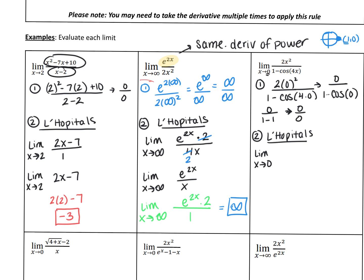The derivative of 2x squared is 4x. For the denominator: the derivative of 1 is nothing, and the derivative of negative cosine of 4x — using sine/cosine/negative sine/negative cosine — the derivative of negative cosine is sine. So it's sine of 4x, and by the chain rule times the derivative of the inside, which is 4. We can cancel the 4s, giving us the limit as x approaches 0 of x over sine of 4x. Plugging in 0 gives 0 over sine of 0, which is also 0. So we still have 0 over 0 — we have to keep going.